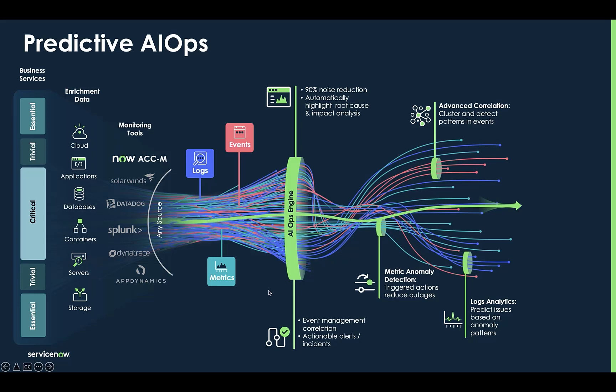The platform is able to help your team achieve 90% noise reduction because disparate events about CIs are correlated to actionable alerts and root cause is automatically highlighted along with impact analysis. This is helpful to know how a business service is being impacted and how any changes may affect other services in your environment.